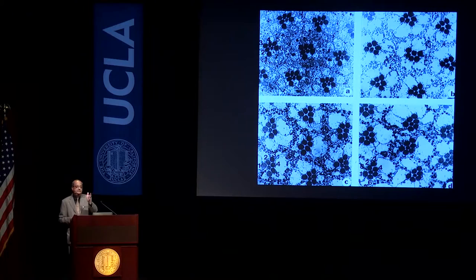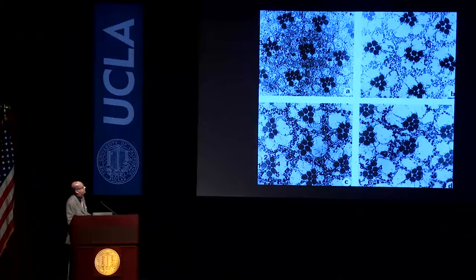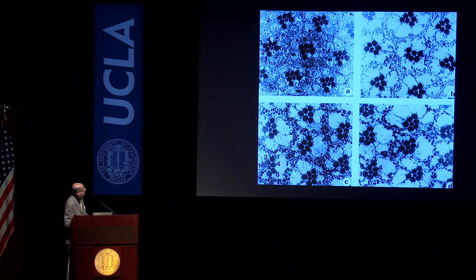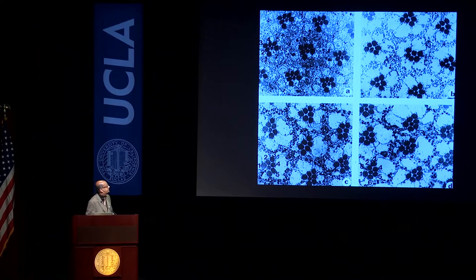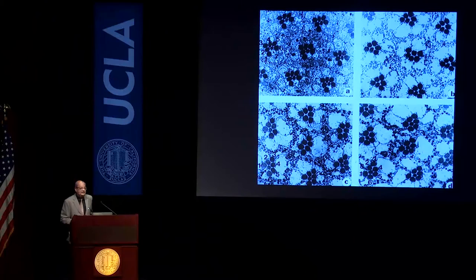While I was still in Seymour's lab, Larry Zipursky had just started at UCLA, and his lab found another mutation — very similar but in a different gene — which they called Bride of Sevenless, or Boss. In my lab at UCLA, we started working on a suppressor mutation — I'll explain what a suppressor is in a minute — the result of which is that some ommatidia have the R7 and others do not.